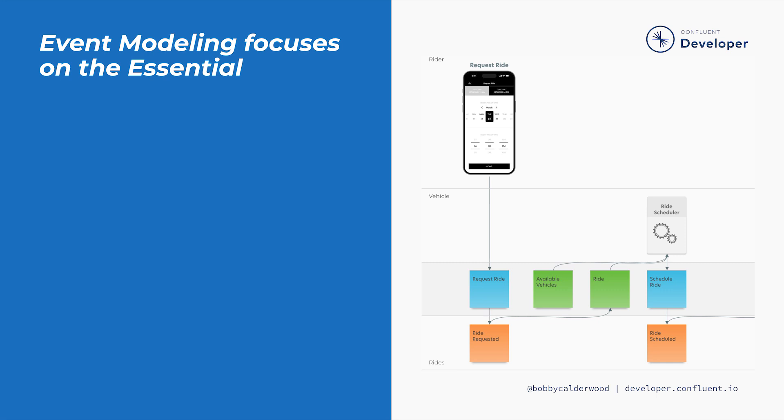Just like the plans for building a house, anyone can understand basic features and constraints just by looking at the plans, but they don't need to know the meaning of every little notation or detail. We achieve this balance of simplicity and specificity by focusing directly on the most essential aspects of the business information system. While other design and requirements capture mechanisms focus on elements like user stories, database schemas, API surfaces and interactions, and deploy time dependencies and infrastructure, event modeling laser focuses on the most essential aspects of a business information system.